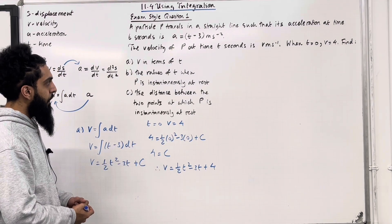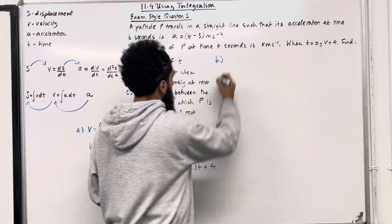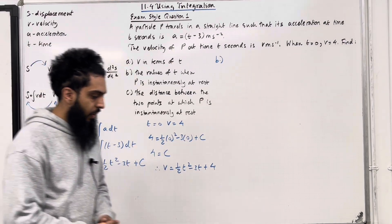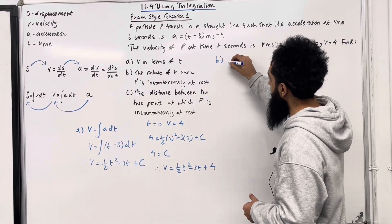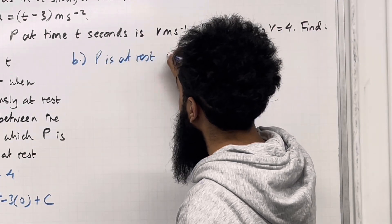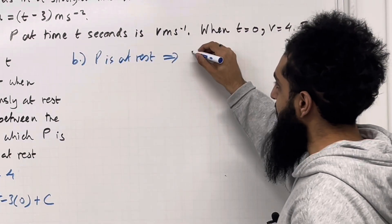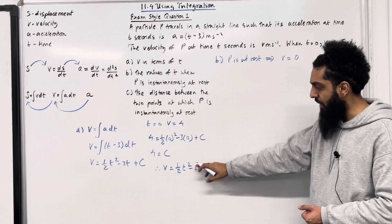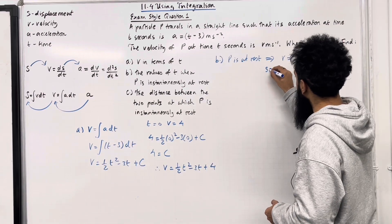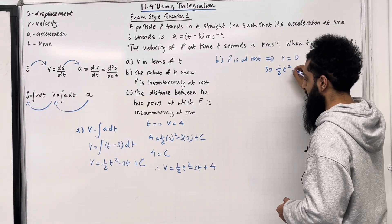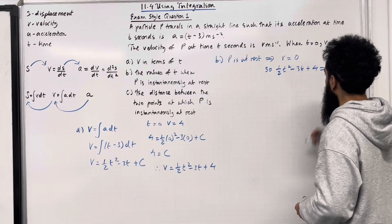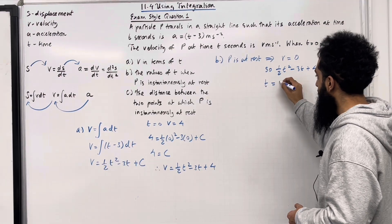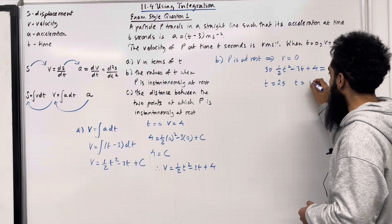Let's move on to part B: find the values of T when P is instantaneously at rest. P is at rest, which implies that V = 0. We have the velocity equation ½T² − 3T + 4 = 0. Solving this quadratic, we get T = 2 seconds and T = 4 seconds.